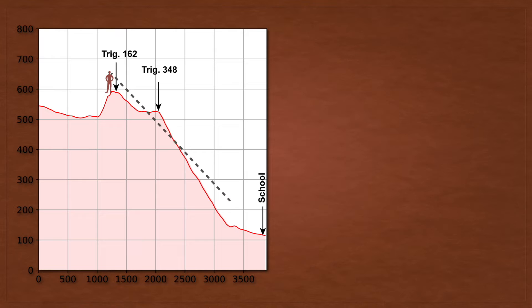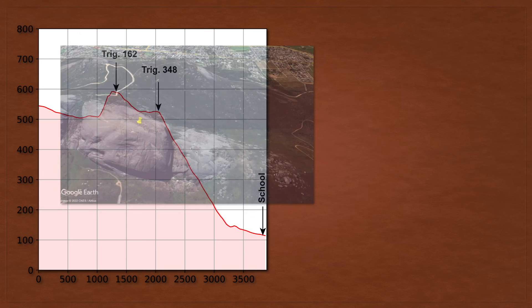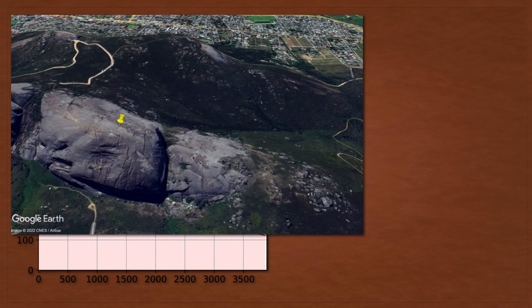But what if you stood on top of the mountain there where Trigbeacon 162 is? When you look down towards the school, even though Trigbeacon 348 is lower, it's blocking your view. And so therefore, you see it's not intervisible, as we can see from the Google image.